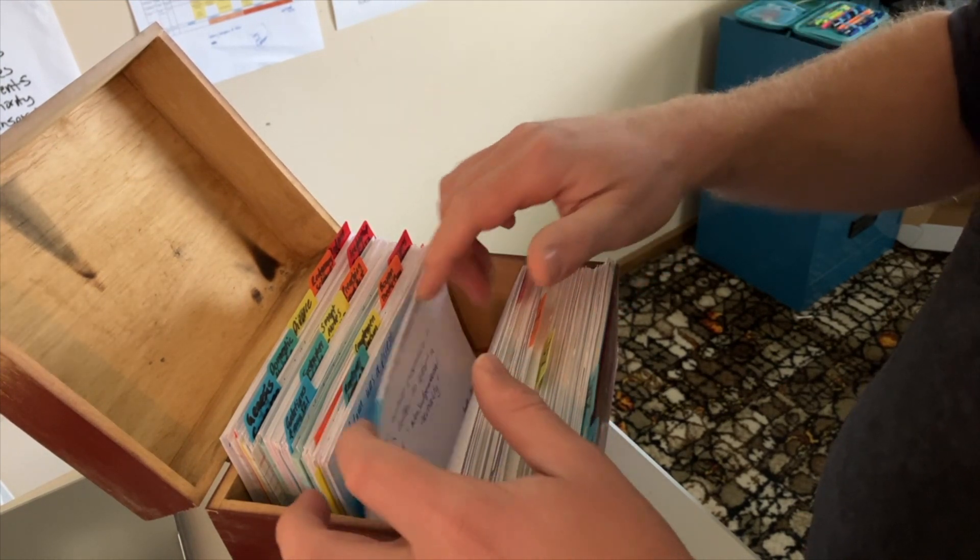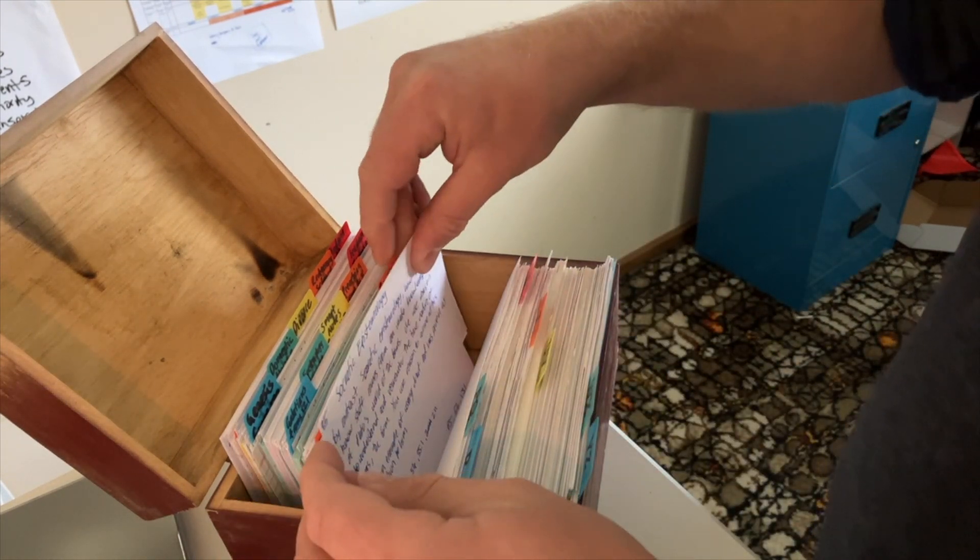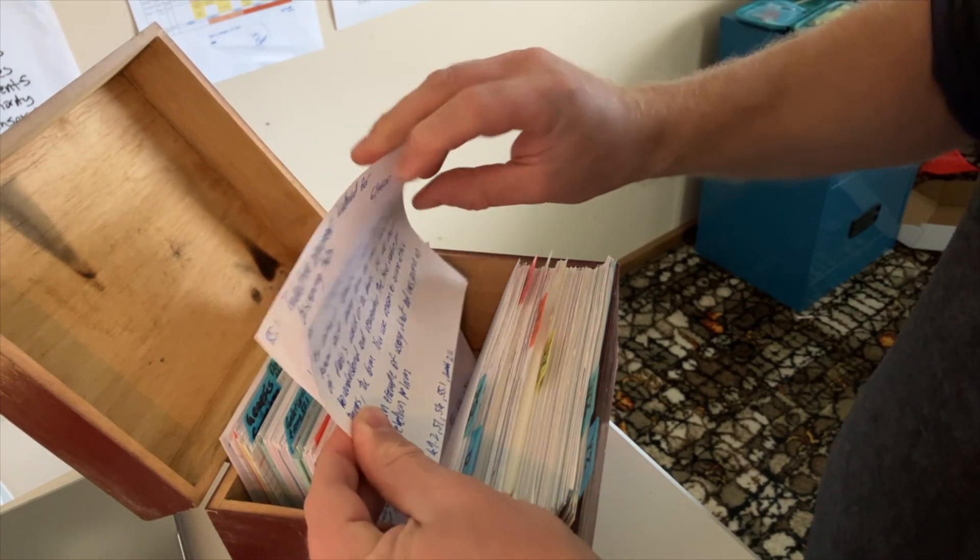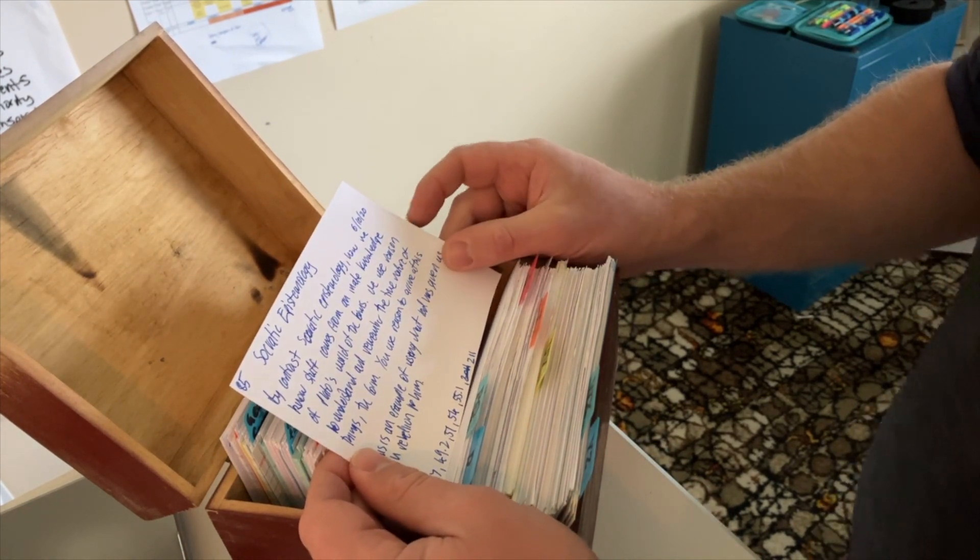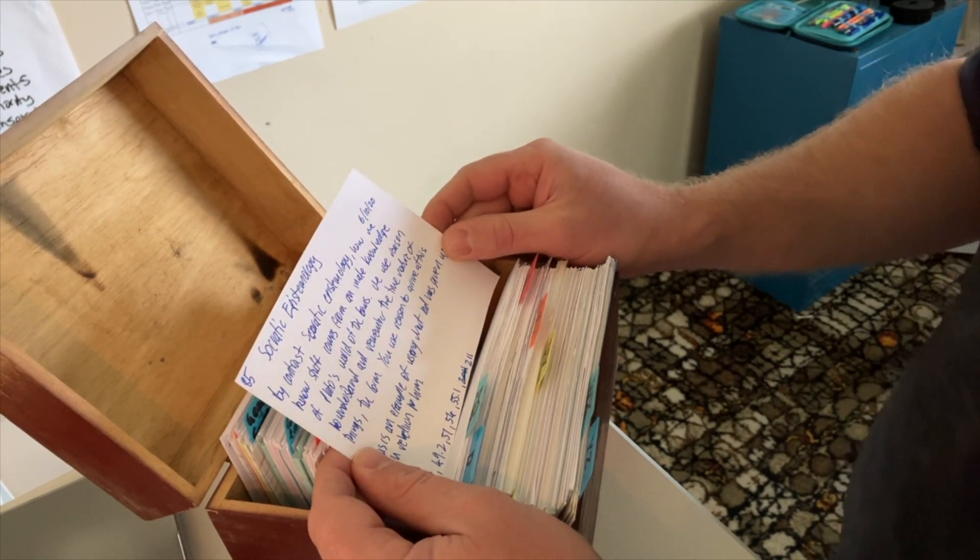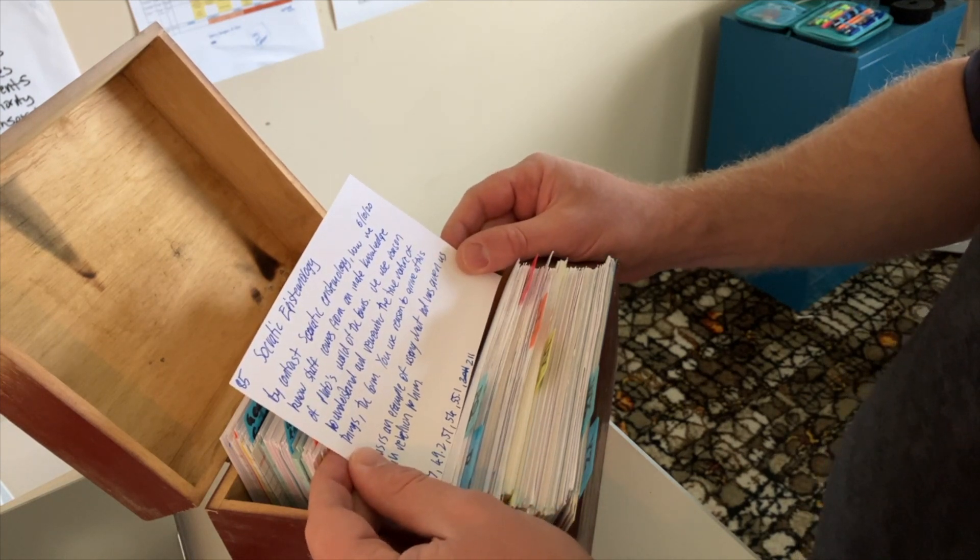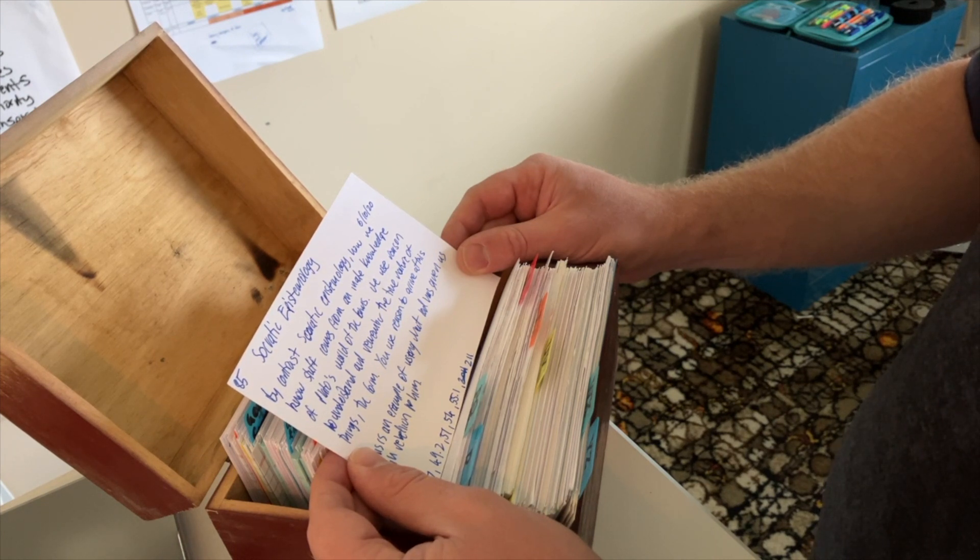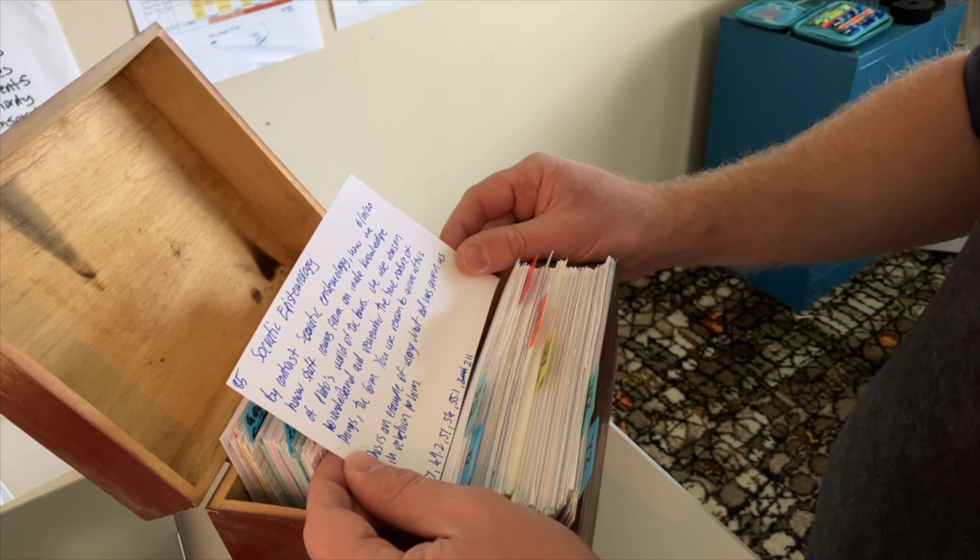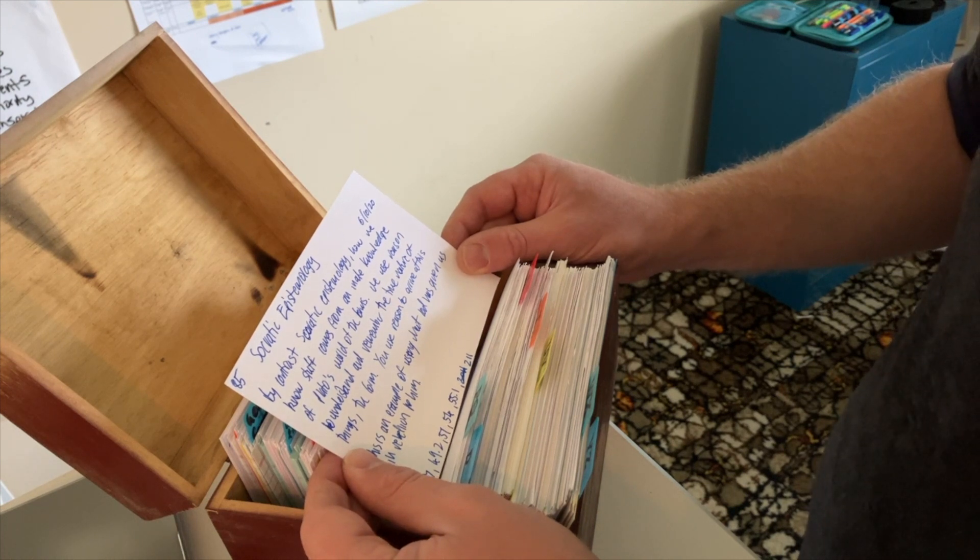This one will link me to card 85. I think as I went on, I got better at linking cards. Early on we got stuck in a loop, but as I went on I got a bit better at linking. This is from a podcast I was listening to about philosophy. It's a link to Socratic epistemology as a kind of contrast to biblical epistemology. By contrast, Socratic epistemology comes from an innate knowledge of Plato's world of the forms. We use reason to understand and remember the true nature of things, the form. You can use reason to arrive at this. This is an example of using what God has given us in rebellion to him. There's lots of stuff we can learn from Socrates, but he wasn't thinking after Christ.